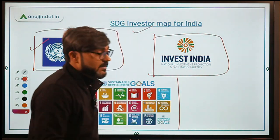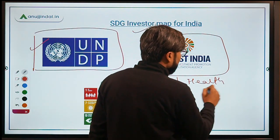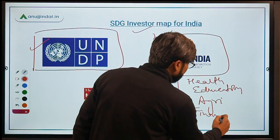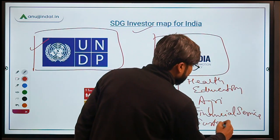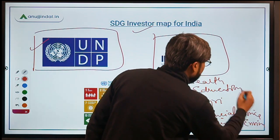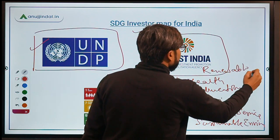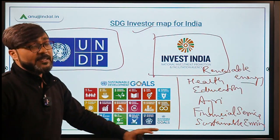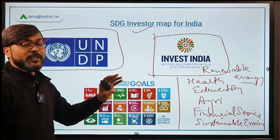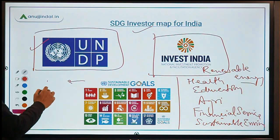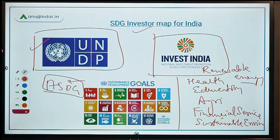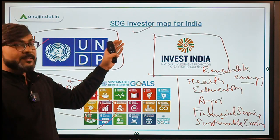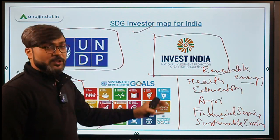The report talks about 6 SDGs: health, education, agriculture and allied activities, financial services, sustainable environment, and renewable energy. Remember these 6 SDGs. We all know there are 17 sustainable development goals to be achieved by the year 2030 with 169 targets, and this report focuses on investment opportunities in these 6 specific goals.